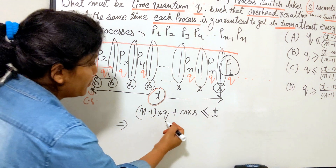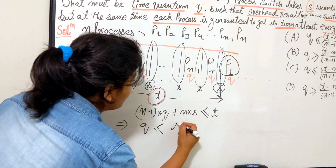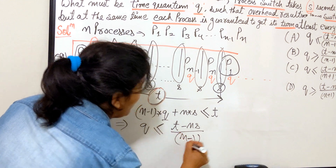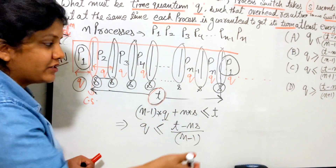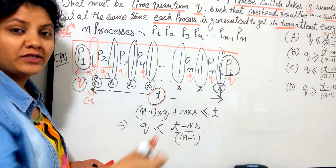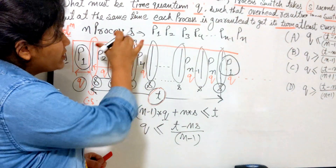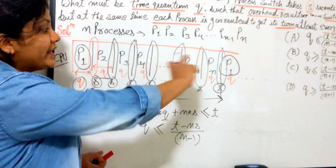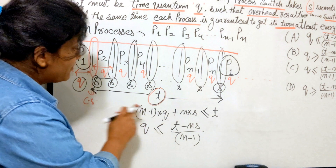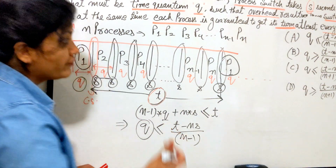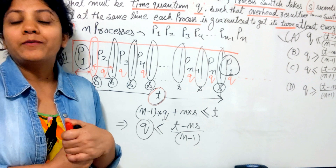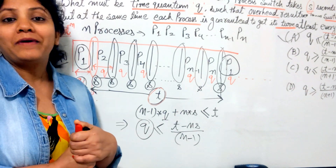Solving the inequality for q: (n-1)·q ≤ t - n·s, which gives q ≤ (t - n·s) / (n-1). That is our expression for the time quantum q. Notice we had no numerical values — just the variables t, q, s, and n — and by applying round robin logic with a generalized Gantt chart we derived this expression. Checking the given options, option A is the correct answer. We'll continue with the next question in the next video — bye and take care.